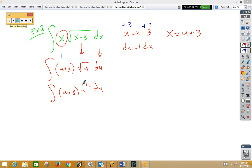Like the last problem, we're now going to distribute. So we get u to the 3 halves plus 3u to the 1 half. And we're going to integrate that now. So u to the 3 halves would be u to the 5 halves multiplied by 2 fifths plus 3 times 2 thirds u to the 3 halves plus c.